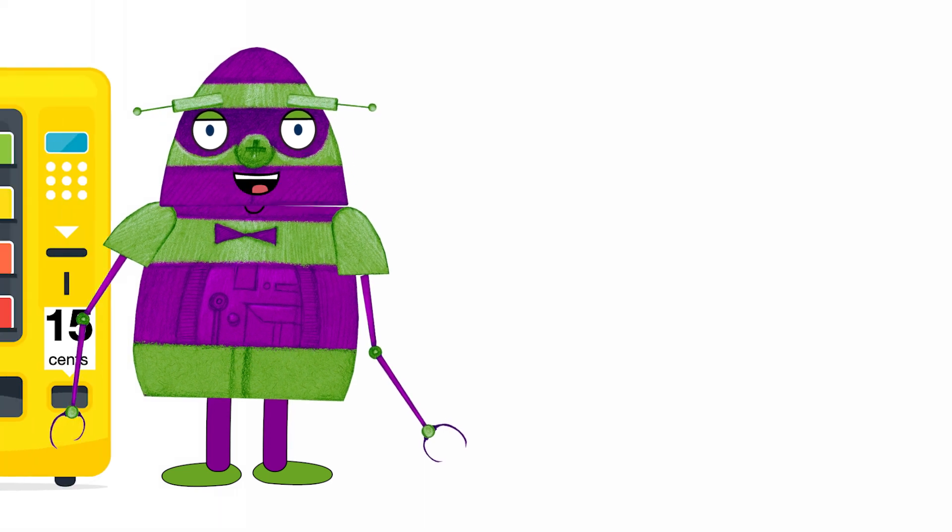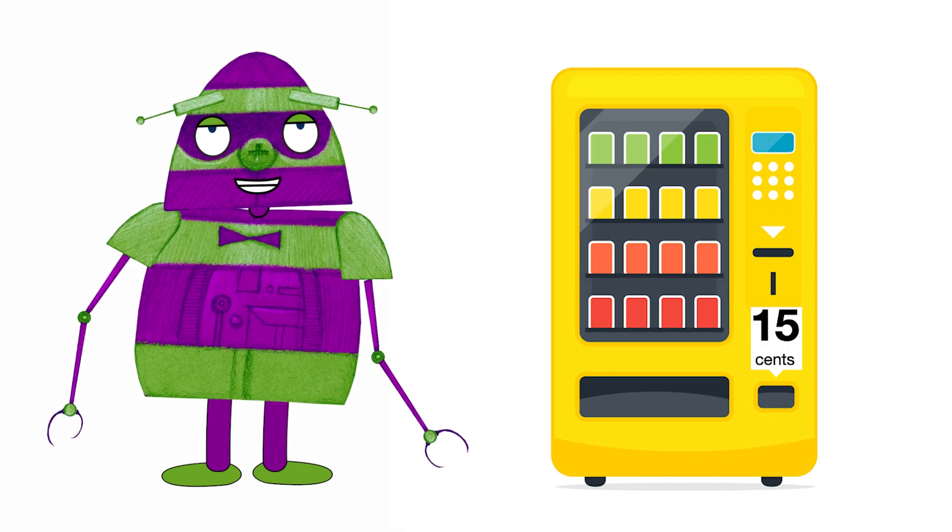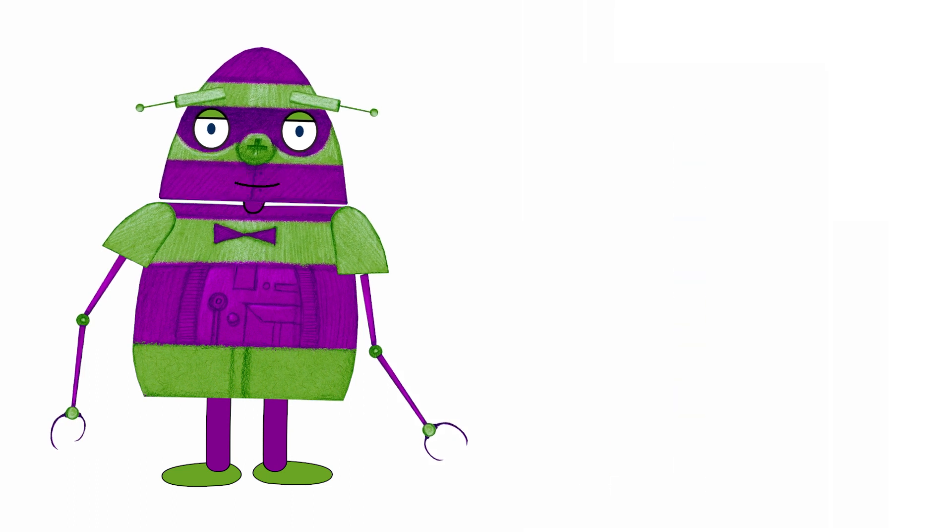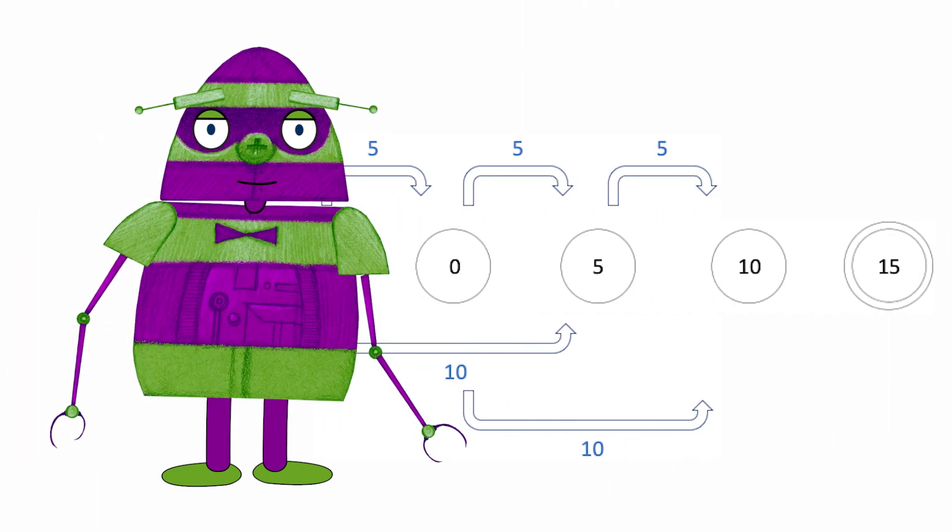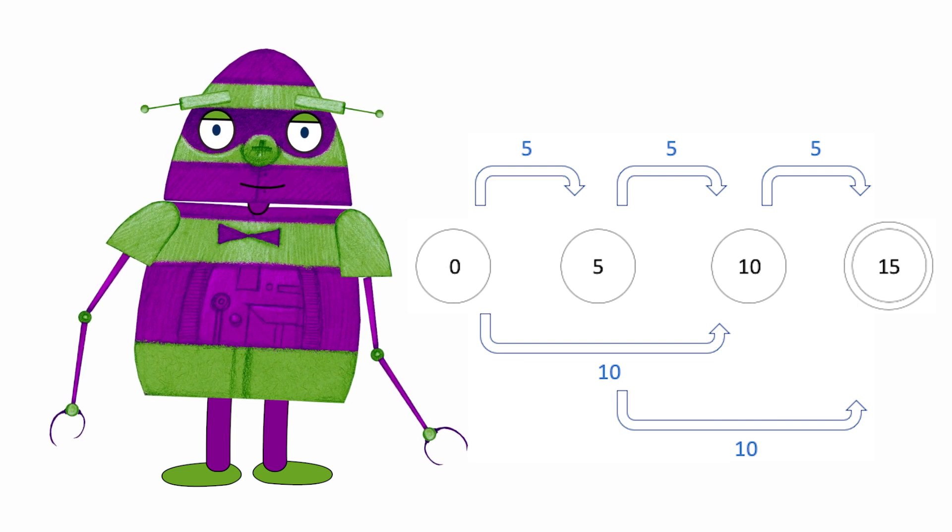What if the price of a snack is 15 cents? How would the abstract machine change? Well, the number of states would increase, and adding transitions, we would get this abstract machine.